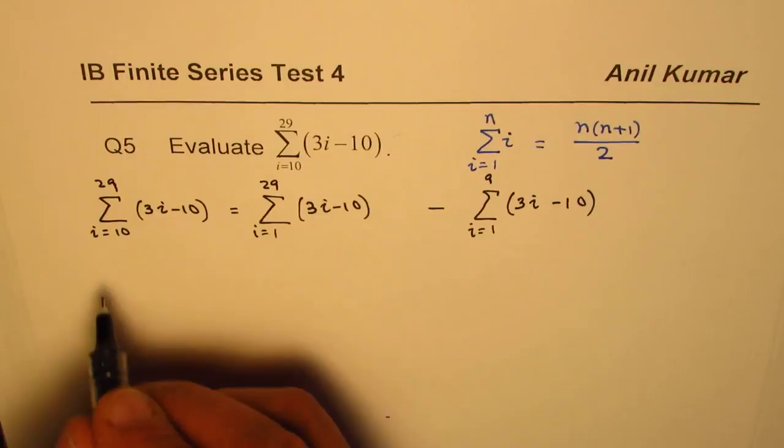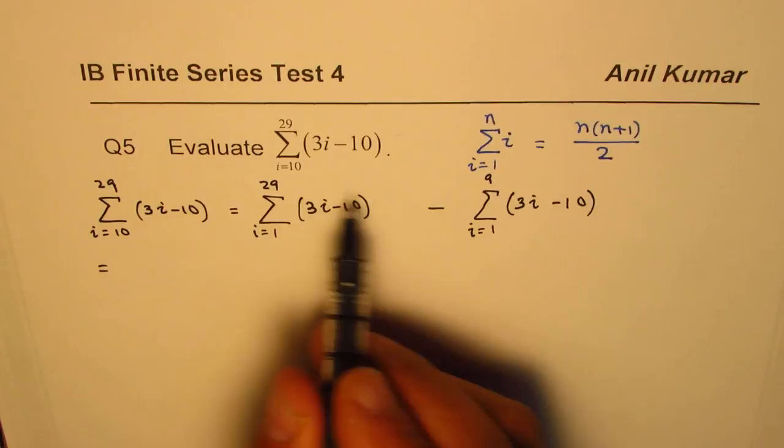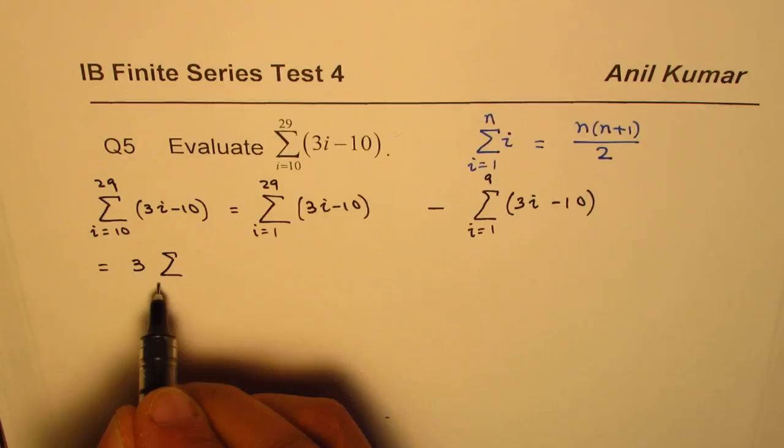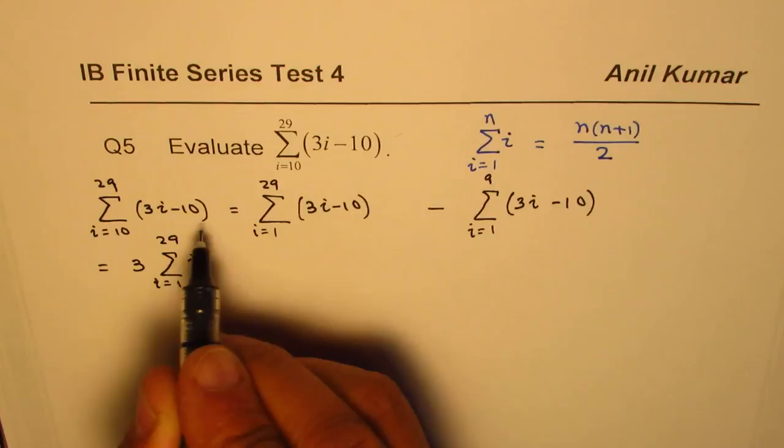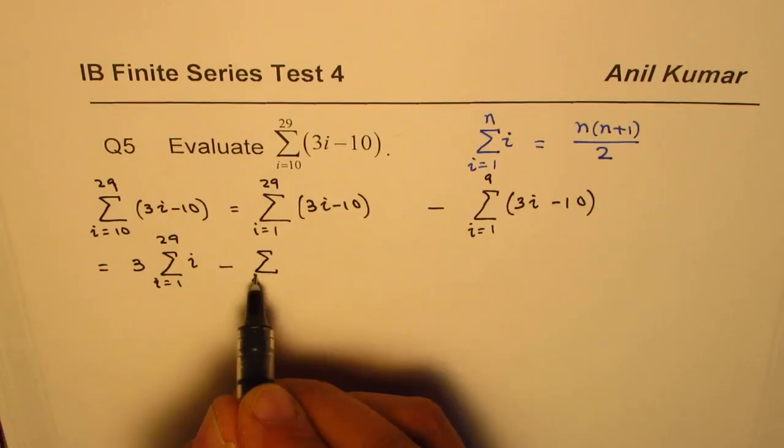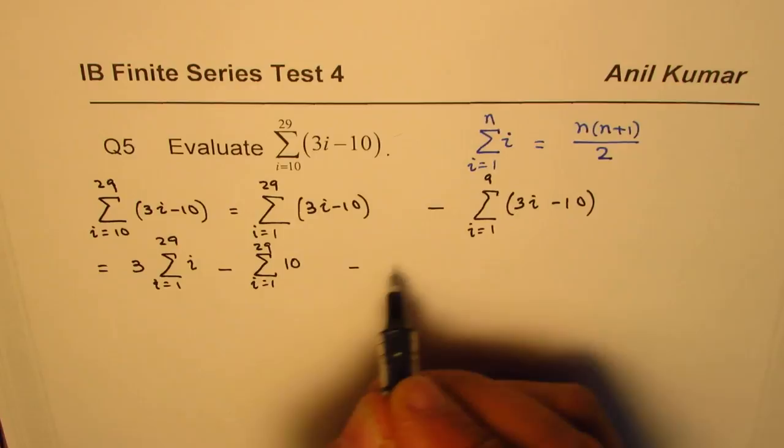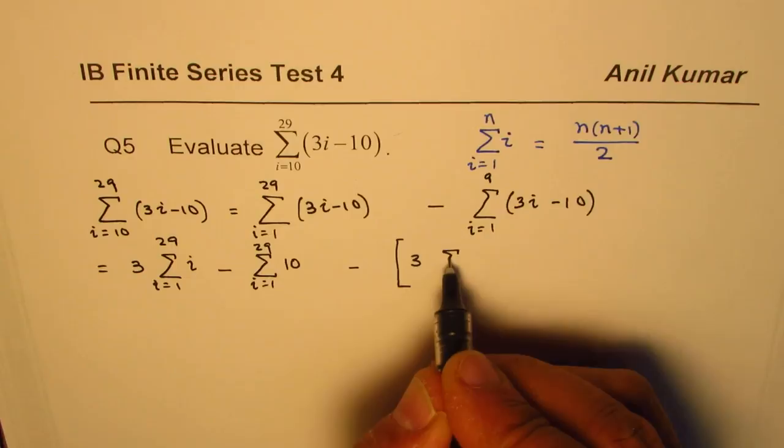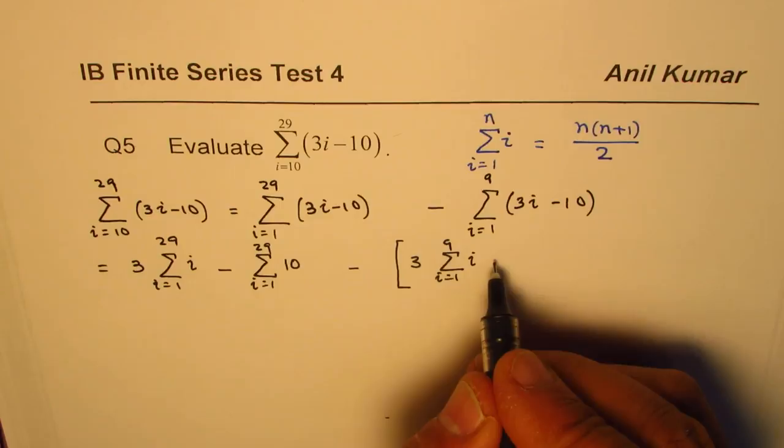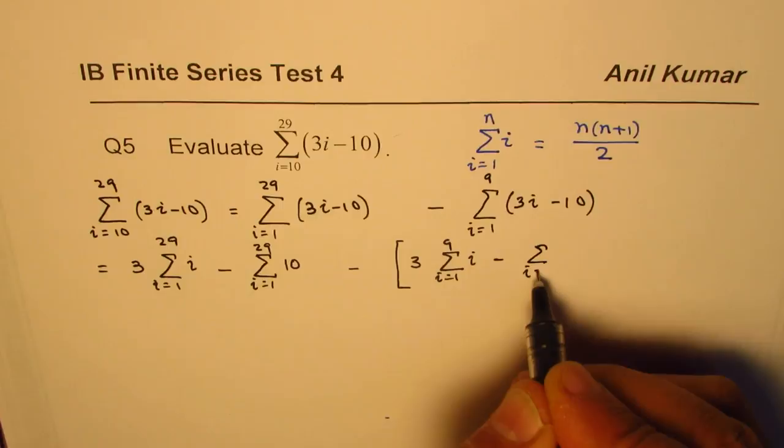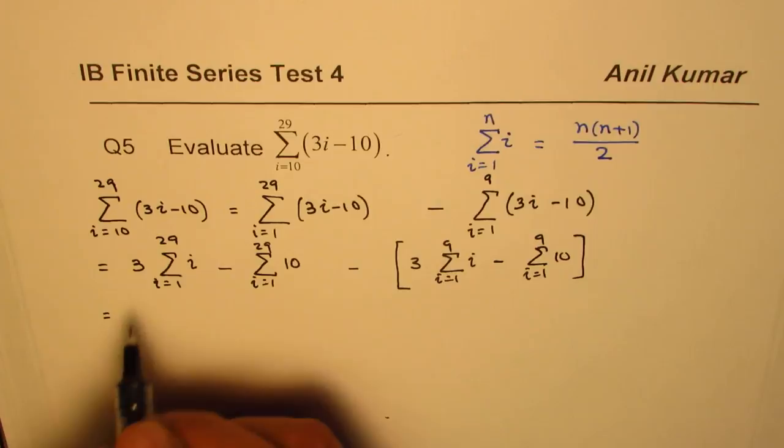Okay, now let's continue from here. So we'll write this as equal to, so 1 to 29, we'll apply this formula. Let's open this up first, so it could be written as three times sum from i equals 1 to 29 of i. So I've taken out 3. Minus, now we'll do i equals 1 to 29, there are 29 terms of 10 is a constant. 10 times 1, you could write 10 here or outside with 1 inside. Minus this whole thing, so let me put this in brackets: 3 times i equals 1 to 9 for i, minus 10 from i equals 1 to 9 of 10. So these are 10 numbers.